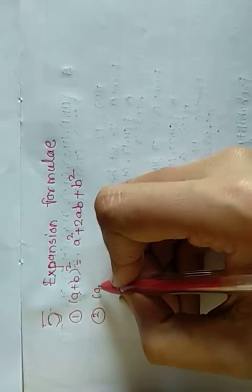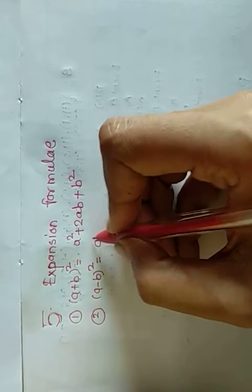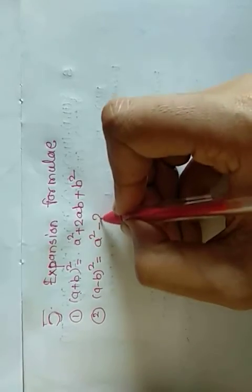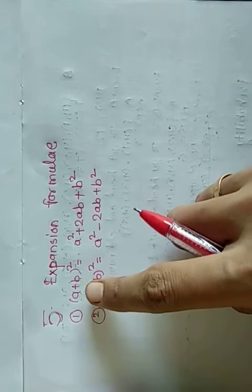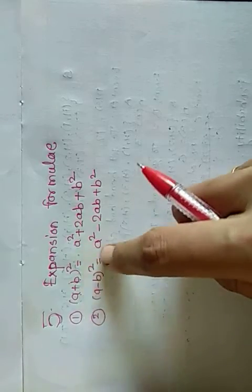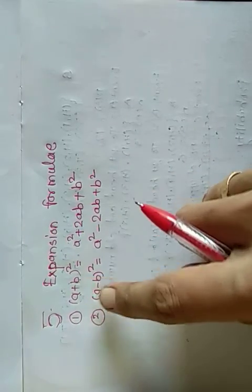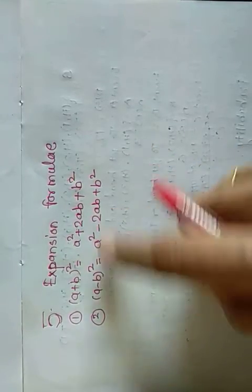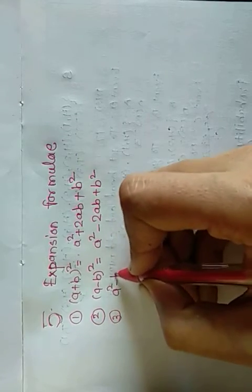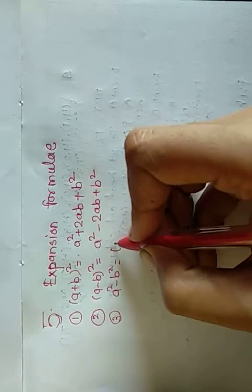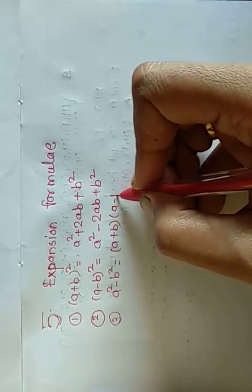The second formula is (a-b)² is equal to a² minus 2ab plus b². These two formulas are similar — the only difference is that the second term has a plus sign in the first formula and a minus sign in the second. The third formula is a²-b² = (a+b)(a-b).